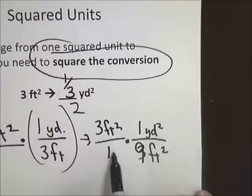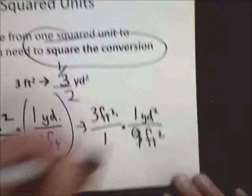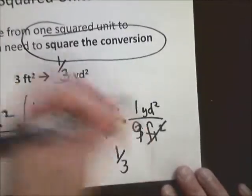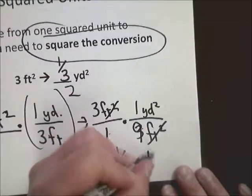I do 3 times 1 over 1 times 9, so it would be 3 over 9, which is one-third. Since these cancel, yard squared. It's pretty simple to do square units.